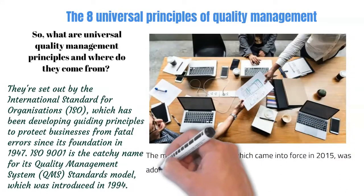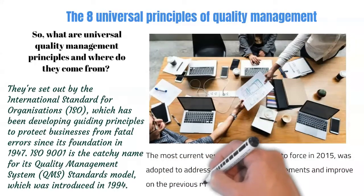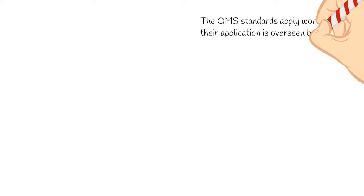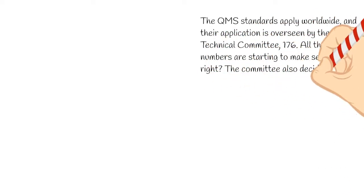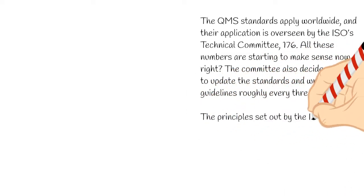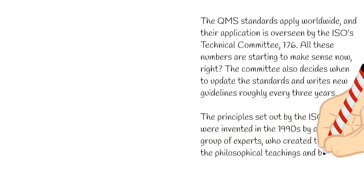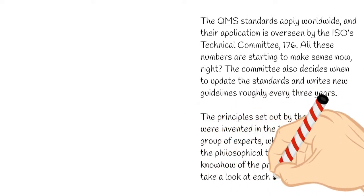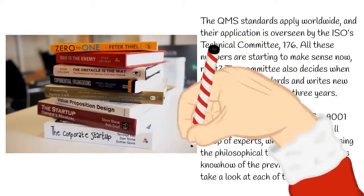The most current version, which came into force in 2015, was adapted to address new regulatory requirements and improve on the previous model. The QMS standards apply worldwide and are overseen by the ISO technical committee 176. The committee also decides when to update the standards and writes new guidelines roughly every three years. The principles set out by ISO 9001 were invented in the 1990s by a small group of experts using the philosophical teaching and business know-how of the previous century. Let's take a look at each of them in detail.